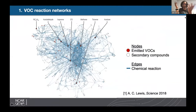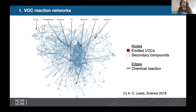VOCs have extremely diverse chemistries as illustrated by this chemical reaction network — a graph connecting molecular compounds via chemical reactions. Compounds are represented by nodes and reactions as edges. VOC compounds shown as red dots undergo daytime and nighttime oxidation, leading to secondary compounds (white dots) which are usually short-lived but participate in further reactions, eventually breaking down potentially into carbon monoxide, CO2, and water — the leaf nodes in the graph.